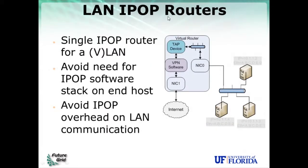In this different model, the virtual router runs the VPN software IPOP and the TAP device, and has two network interfaces: one connected to a local area network and one connected to the internet and the rest of the overlay.